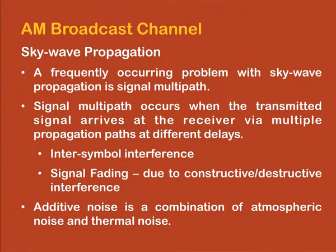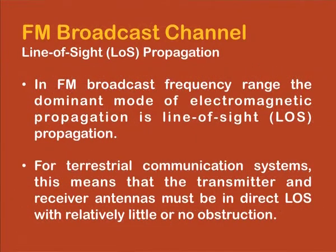Apart from this, distortion and interference also come from atmospheric noise and thermal noise. For FM broadcast, line of sight propagation is dominant because these frequencies are not suitable for sky wave or ground wave propagation. By using line of sight propagation, a high antenna at the transmitter can achieve a certain communication range, and increasing antenna height extends the range, but due to physical limitations in antenna height, FM ranges are typically much shorter compared to AM broadcast ranges.